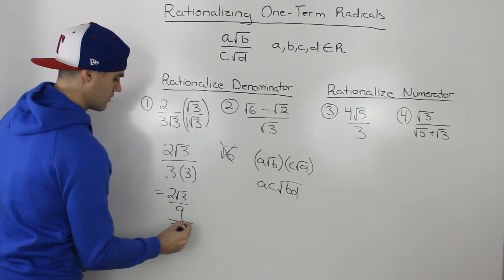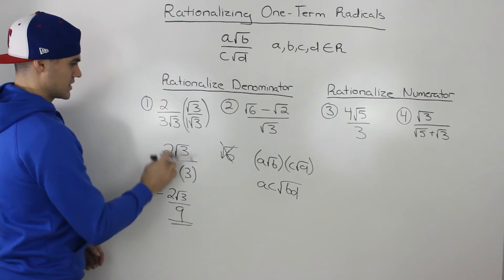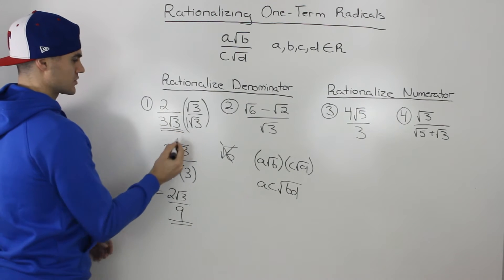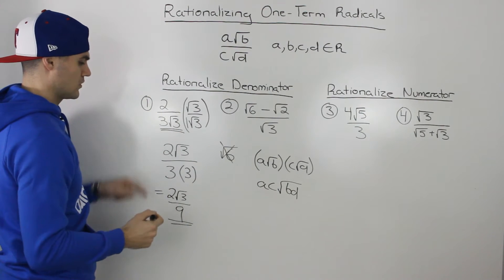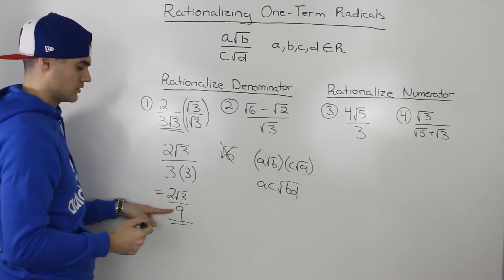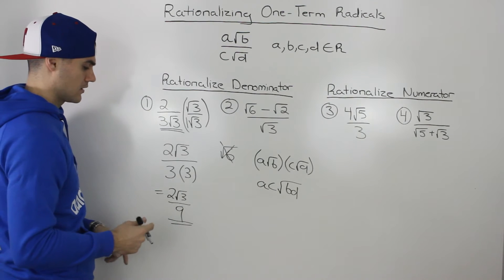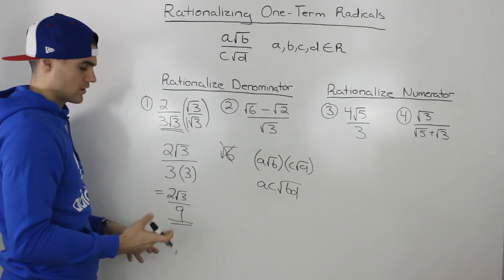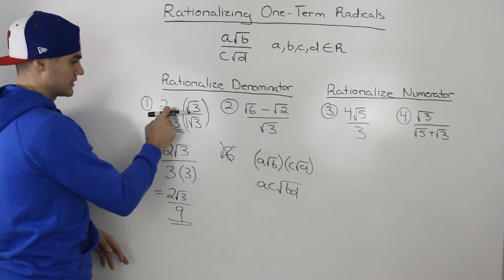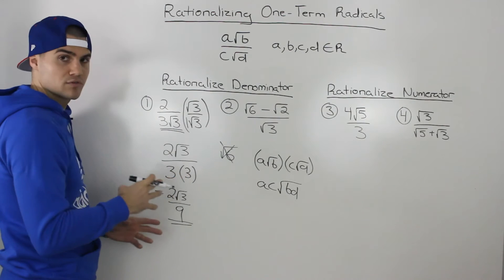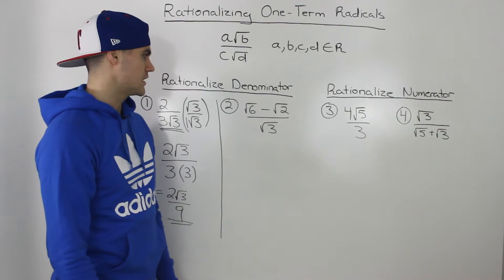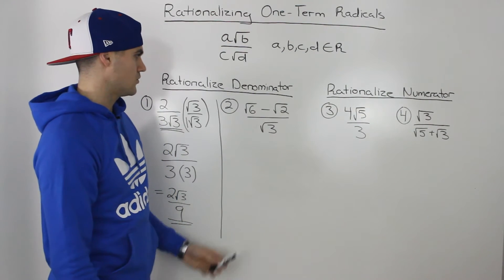We can simplify the denominator, so we'd have 2 root 3 over 9. That expression is equivalent to the original expression 2 over 3 root 3, but notice how there's no radical in the denominator. You can check your answer by plugging both in to get a decimal value and making sure they're both equivalent. Moving on to the next example.